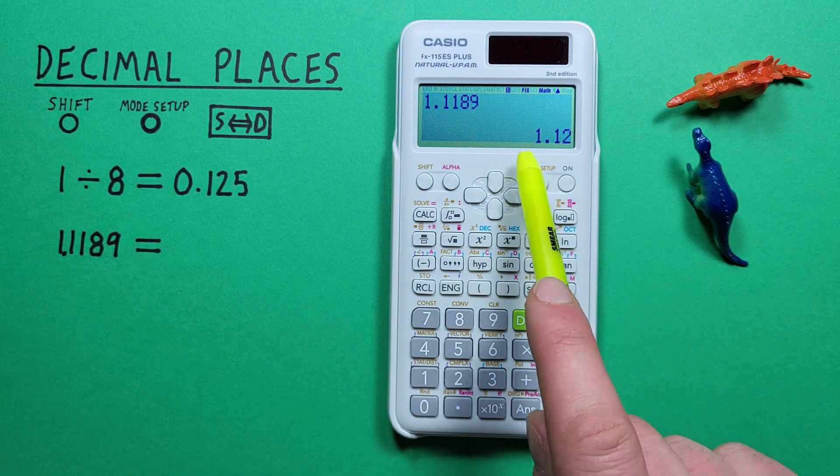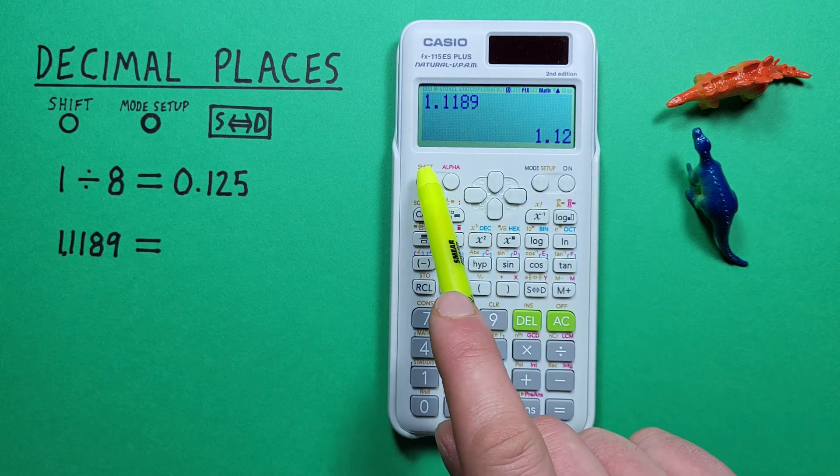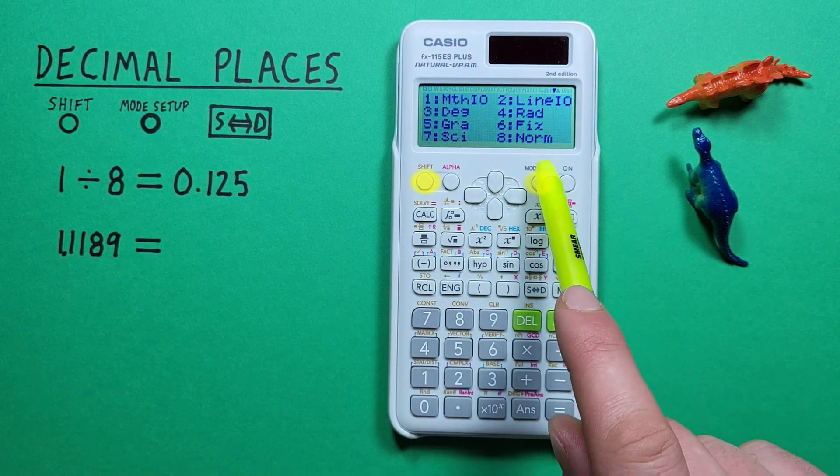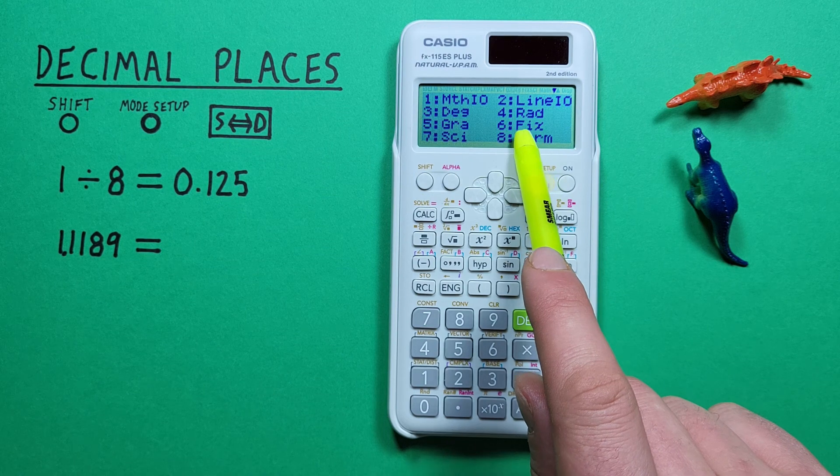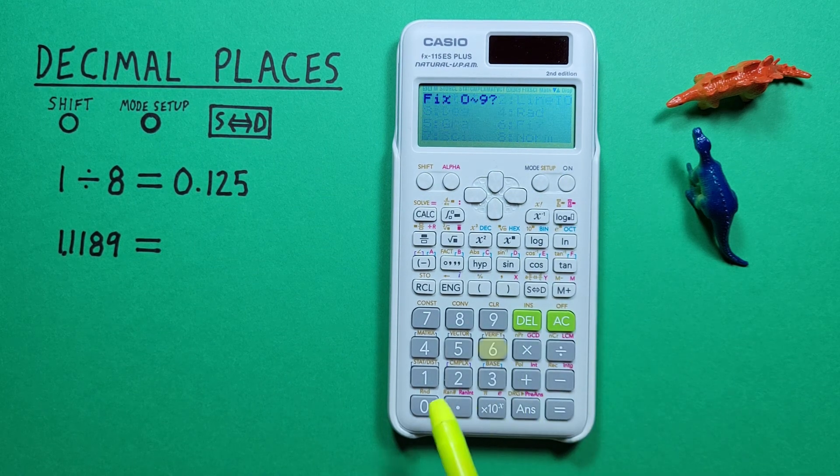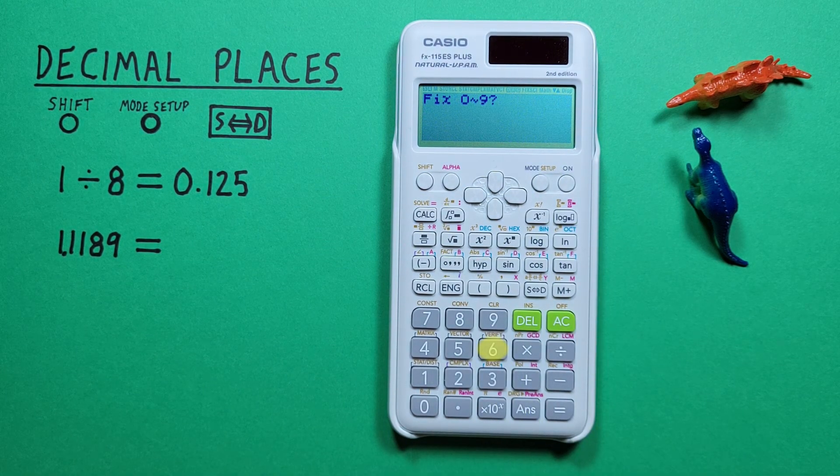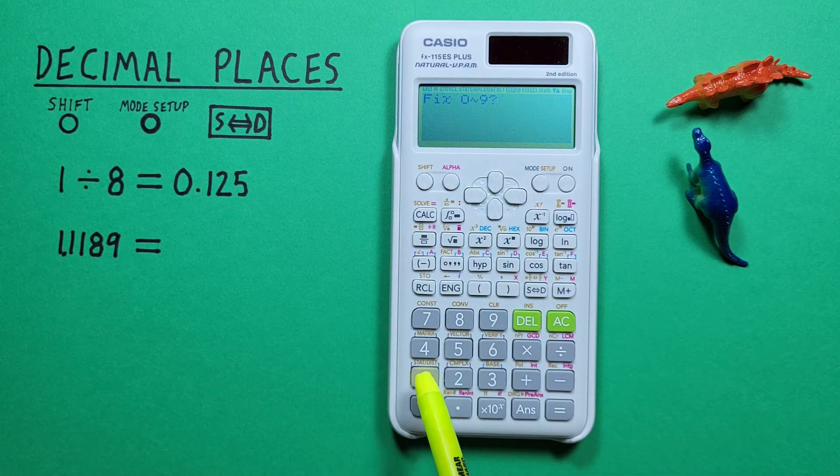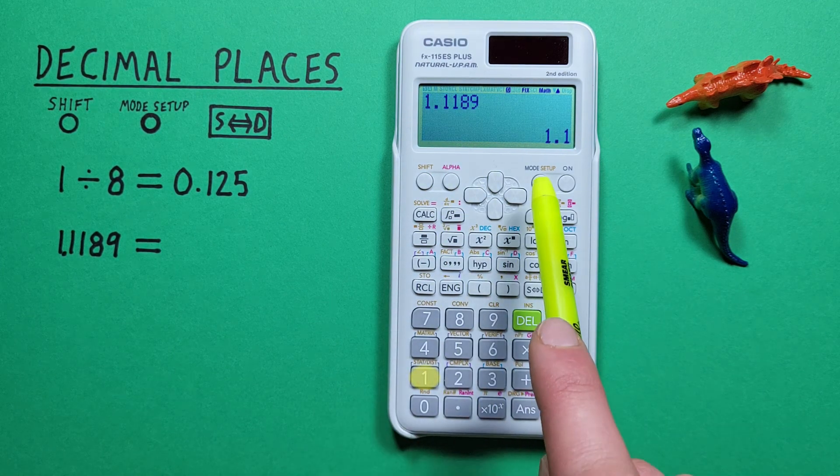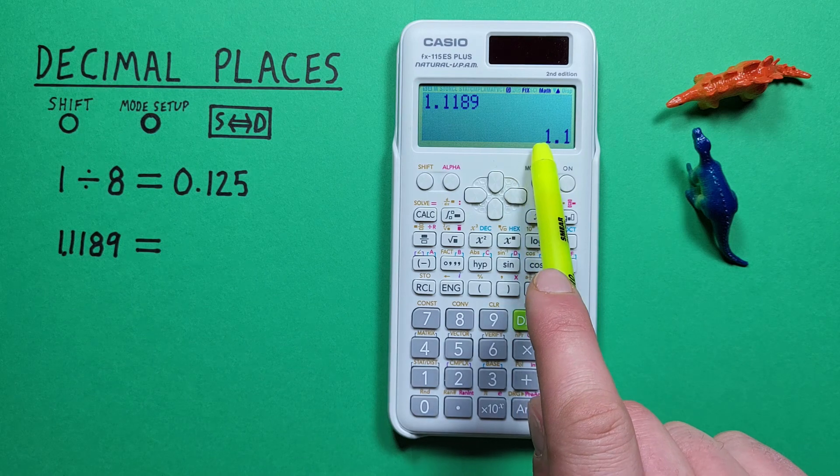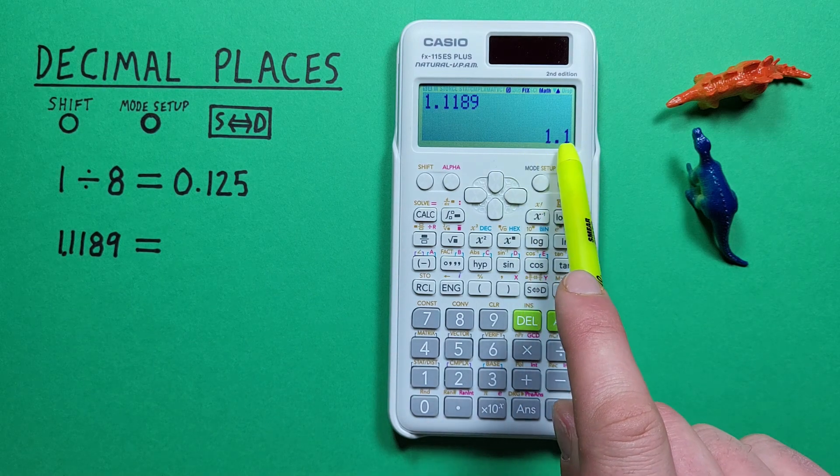If we want to round this to one decimal place we can again press shift mode choose number 6 or fix and press 1 for one decimal. And there we go we're now rounded to 1.1 which is one decimal place.